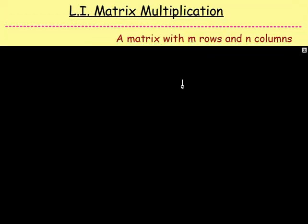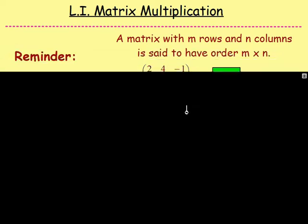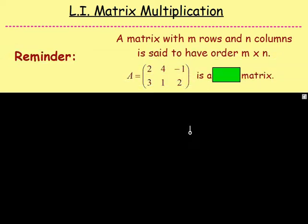We're going to be multiplying matrices together. Before that, something you really need to know is the order of matrices — you have to understand that. So, a quick reminder: a matrix with M rows and N columns is said to have order M by N.